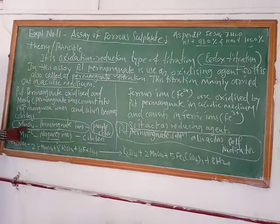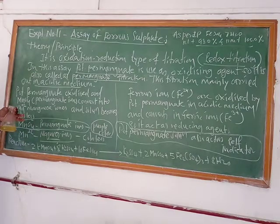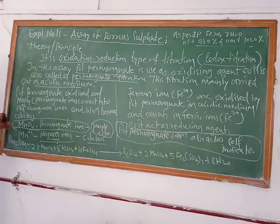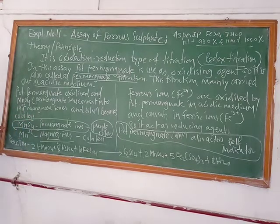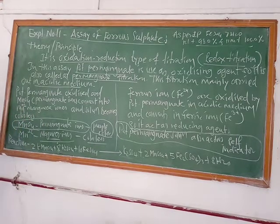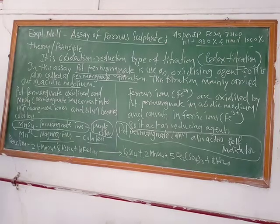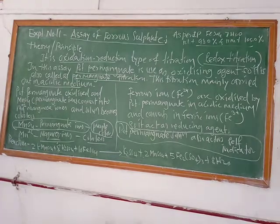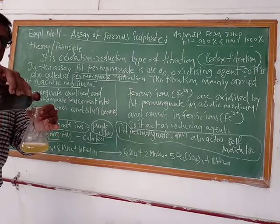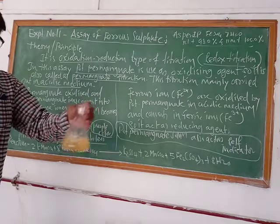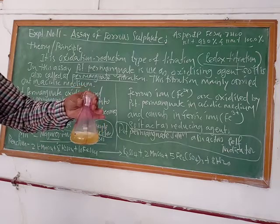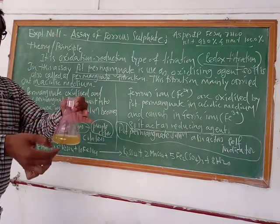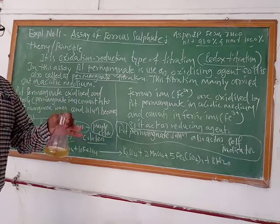Because those permanganate ions, when the reaction is completed, there is no reducing agent, so just one drop of potassium permanganate solution produces color. Then it becomes colored. See the disappearance of color when you add potassium permanganate solution again — it becomes colored.